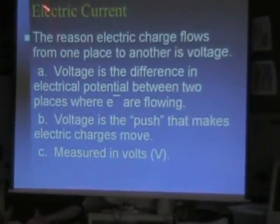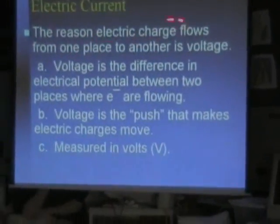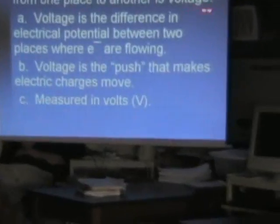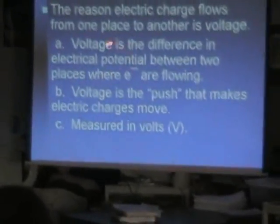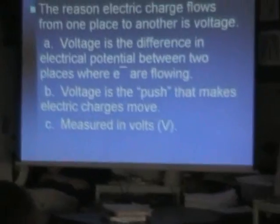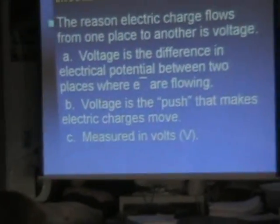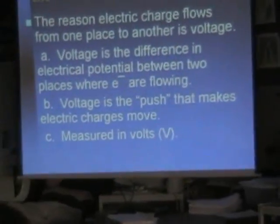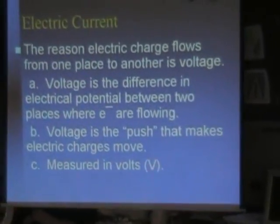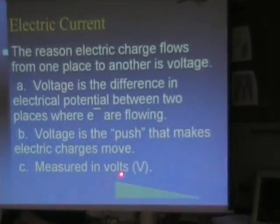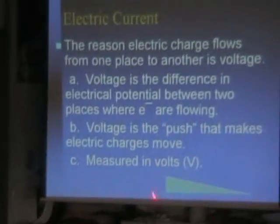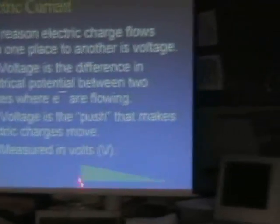It gets so hot that it blows. The reason electric charge flows from one place to another is called voltage. Voltage is the potential difference between two points, A and B. When you have an electric potential difference, you have unevenness of electrical charge.